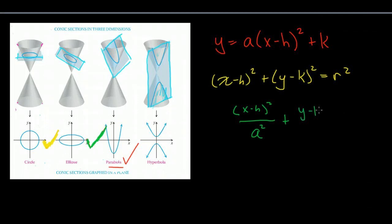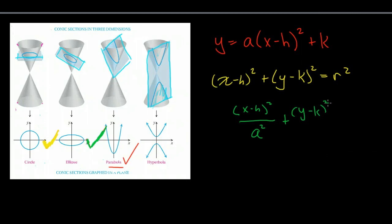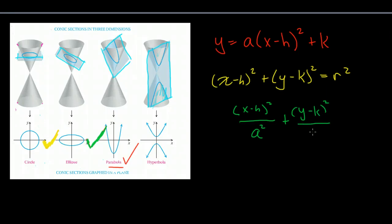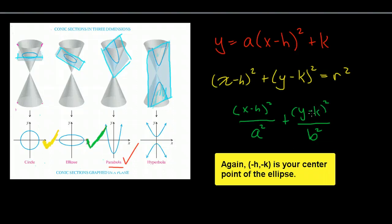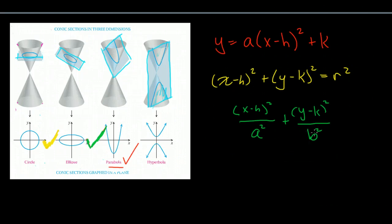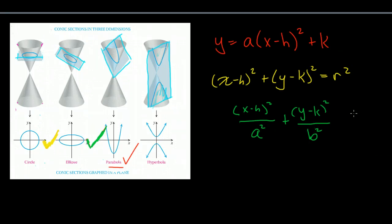Now, the difference here tells us whether this is a circle or an ellipse. If these two numbers are the same, we have a circle. If these two numbers are different, we have an elongated ellipse, either horizontally elongated or vertically elongated, and that's equal to 1.